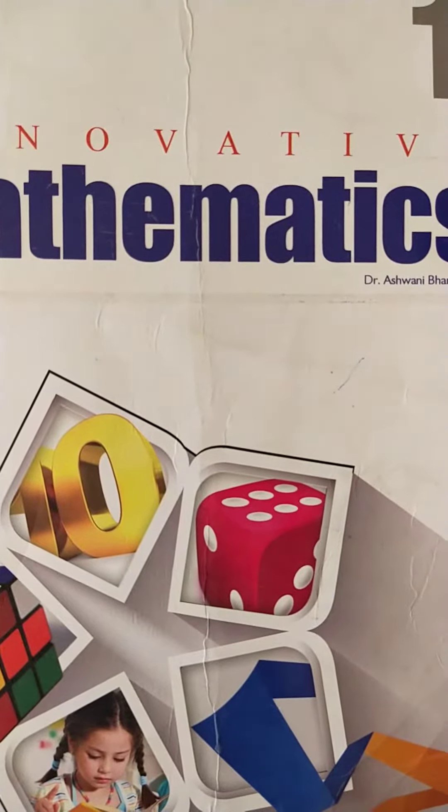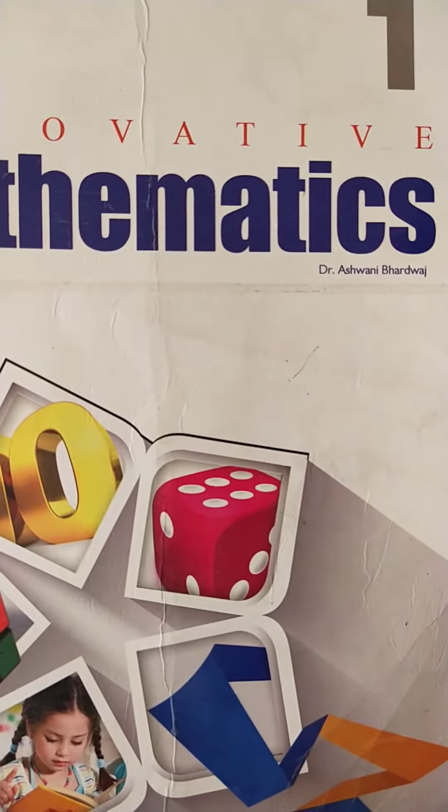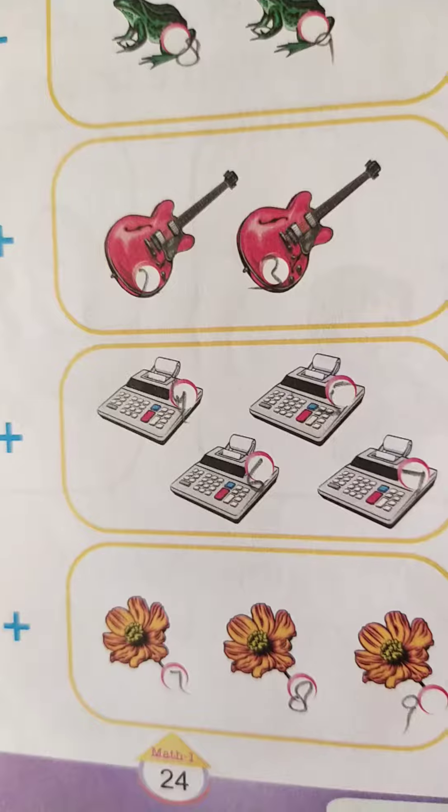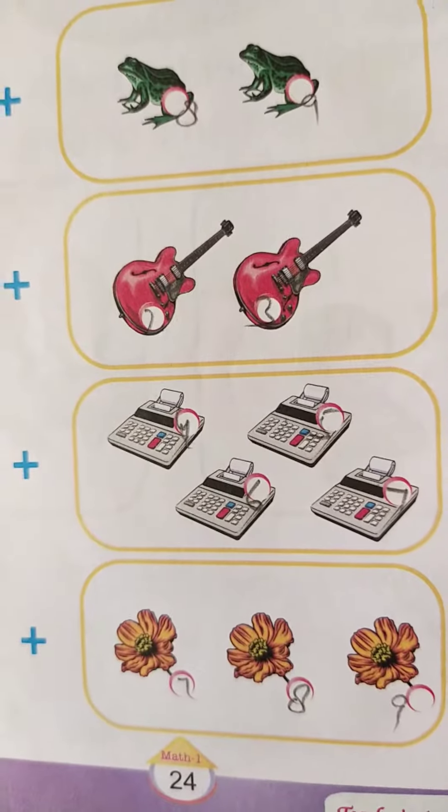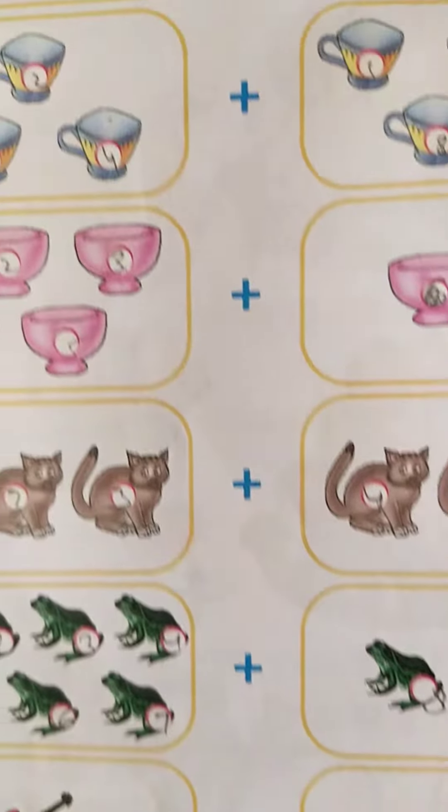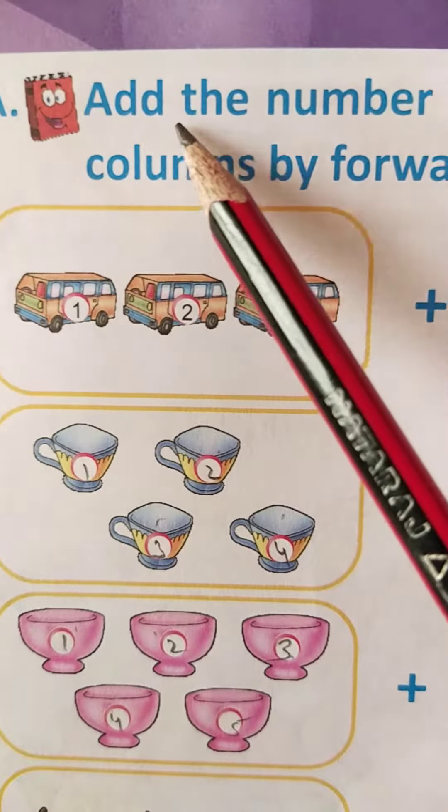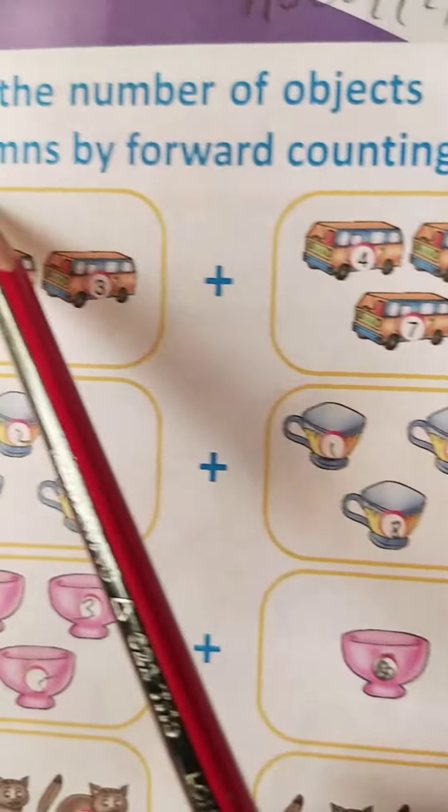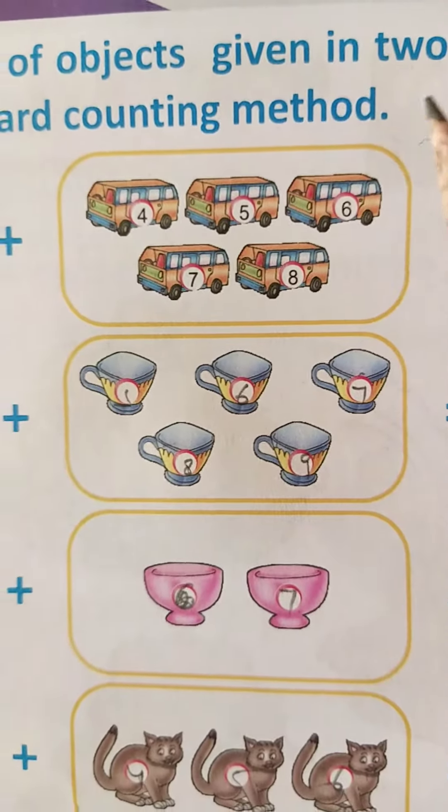Good morning class, class 1. Now it's time to math study. So open your math book and come to the book page number 24. Here students, add the number of objects given into the columns by the forward counting method.